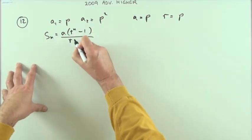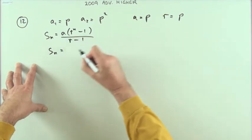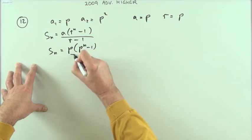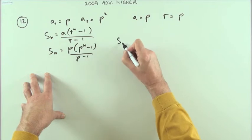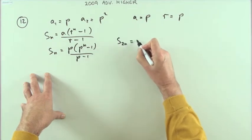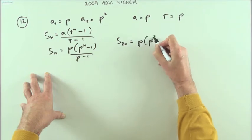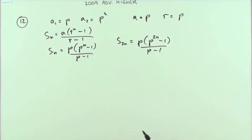So s_n would be, well a is p and r is p, so it's p(p^n - 1)/(p - 1). Similarly, s_2n would be p(p^2n - 1)/(p - 1). That's the first part.